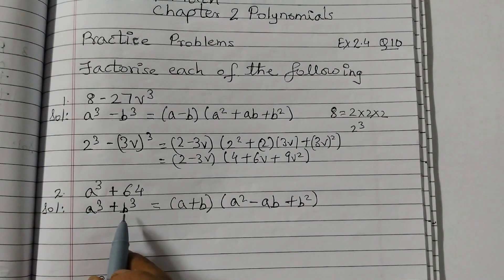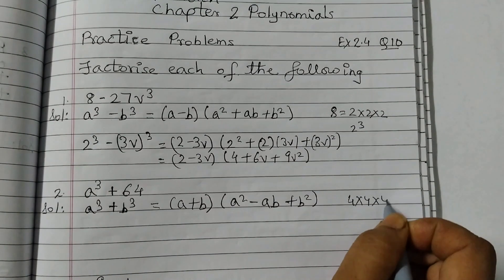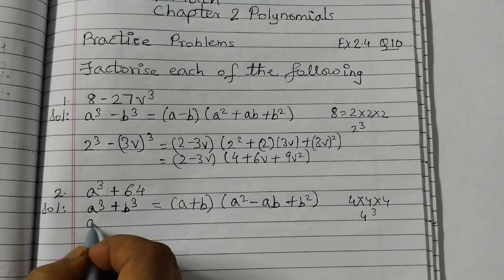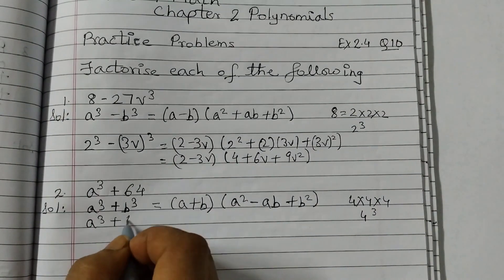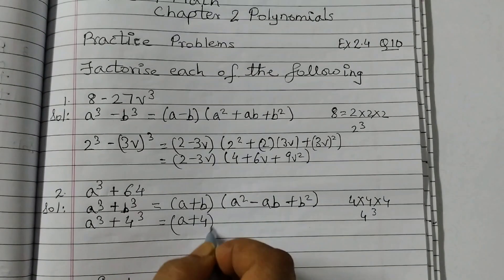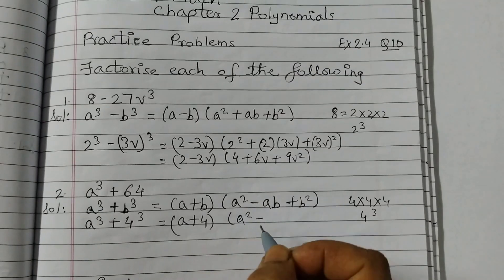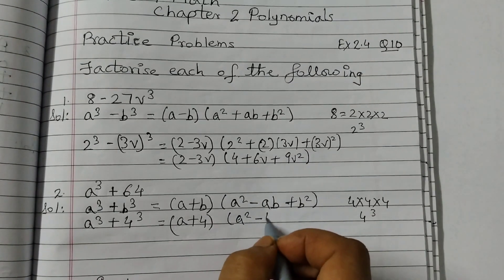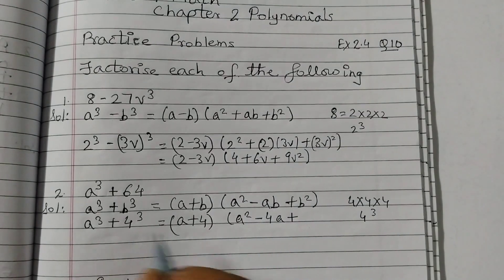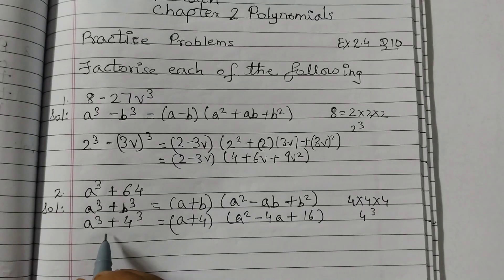Now here A is A and B is, we have to find out, 64 we can write as 4 times 4 times 4, so 4 cubed. So this is A cubed plus 4 cubed. A plus 4 and then A squared minus A into 4 is 4A plus 4 squared, so that is 16. So that's the answer for the second one.